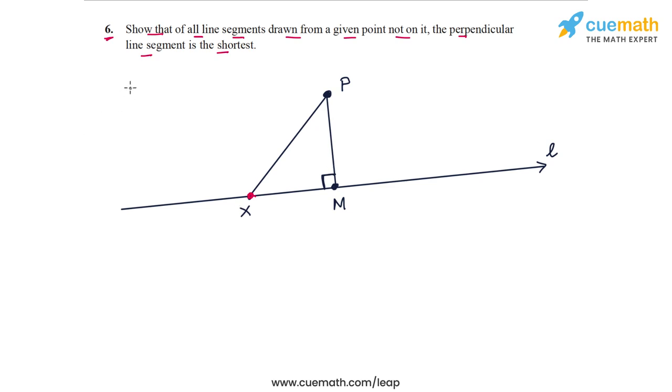Now if you consider triangle PMx, in this triangle, angle PMx is 90 degrees. So this means that angle PMx must be greater than angle Pxm.